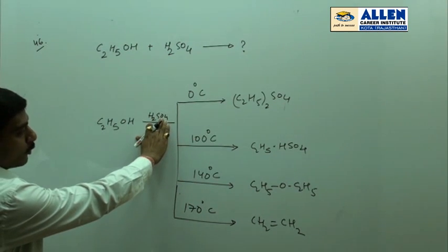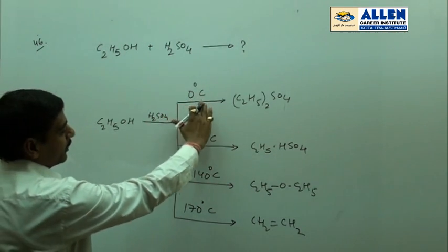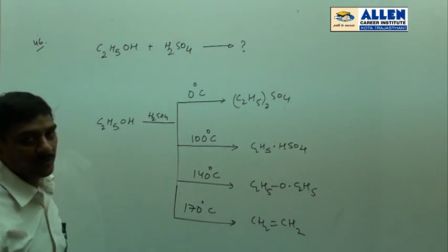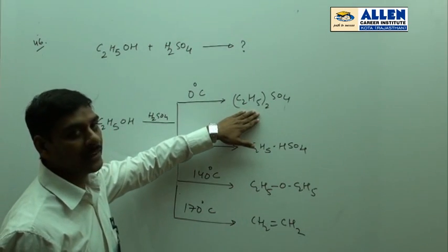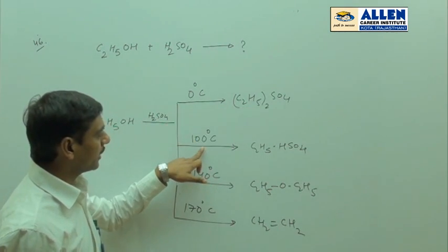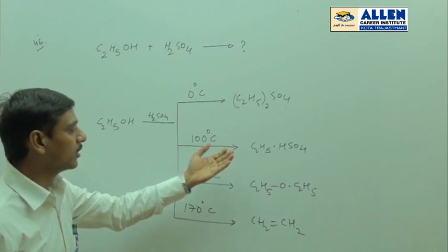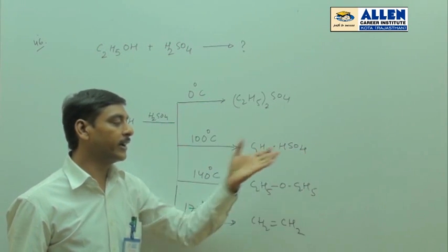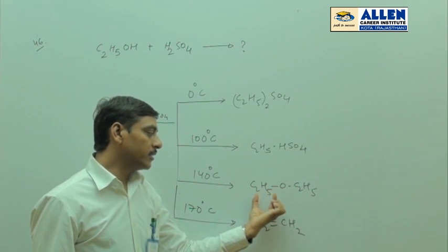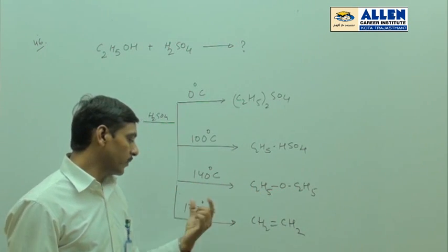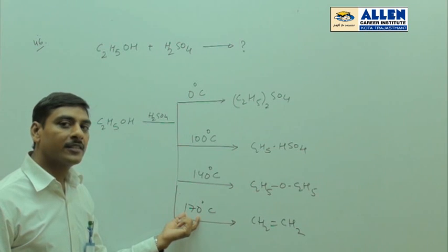At 0 degree centigrade the product is diethyl sulfate. At 100 degree centigrade the product is ethyl hydrogen sulfate. 140 degree centigrade gives diethyl ether, and at 170 degree centigrade the product is ethylene.